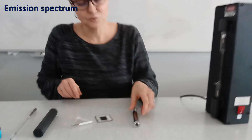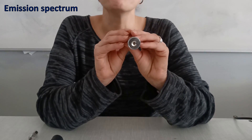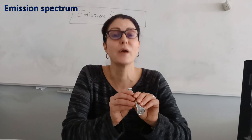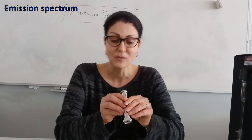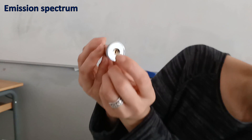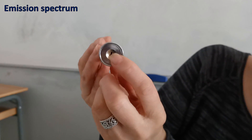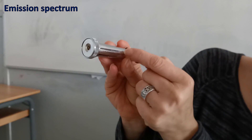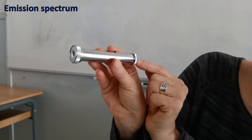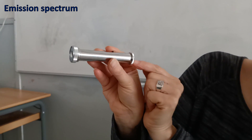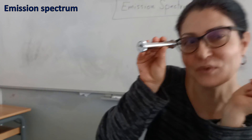I want to use this simple spectroscope in order to observe the emission spectrum of an element. The emission spectrum of an element is the set of wavelengths that constitute the radiation emitted by this element when it is excited. Here we have a slit. Light entering the slit passes through the spectroscope to the diffracting grating located in the eyepiece.